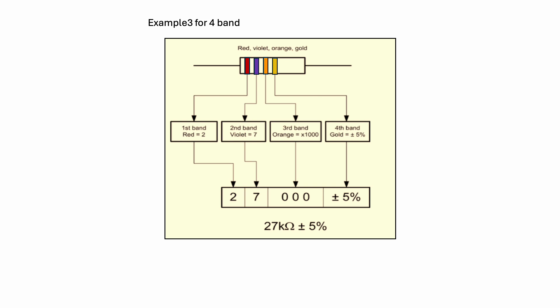In this example, the colors are red, violet, orange, and gold. Red is 2 and violet is 7, giving us 27. The multiplier is orange — 10 to the power 3 — so we get 27,000, which is 27 kilohms. The fourth band gold represents ±5% tolerance. Overall: 27kΩ ±5%.